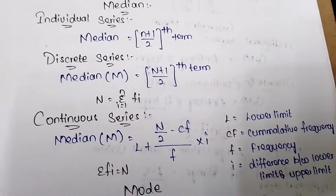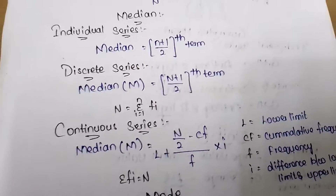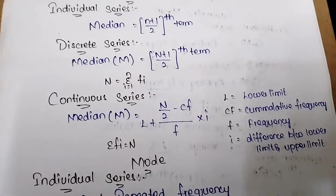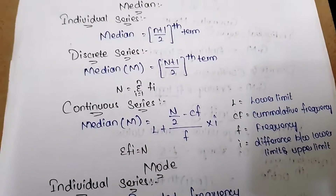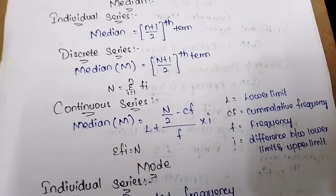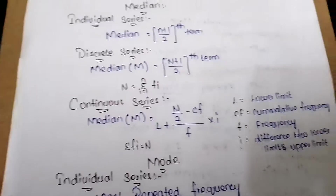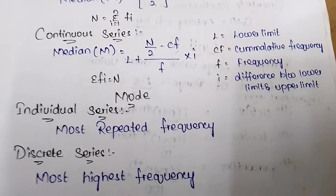In the continuous median formula: cf equals cumulative frequency, f is frequency, and i is the difference between the lower limit and upper limit of the class interval.